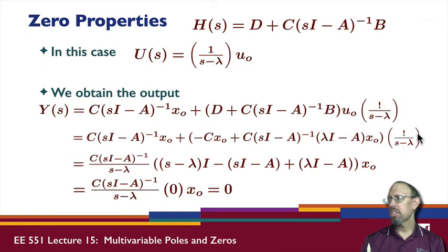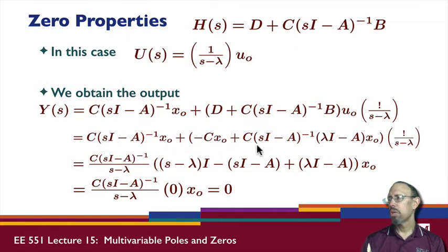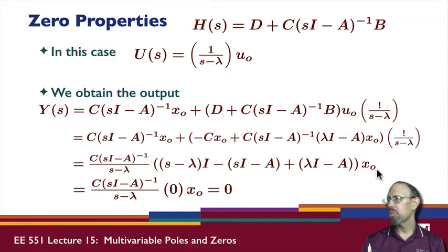Notice that in this expression, every term has C on the left and x0 on the right. This scalar doesn't affect the fact that I have the C matrix on the left and x0 on the right in all these terms. If I factor out C and s*I minus A inverse on the left, and x0 on the right, I get this expression.